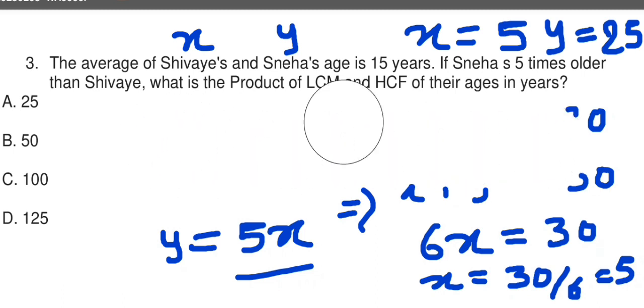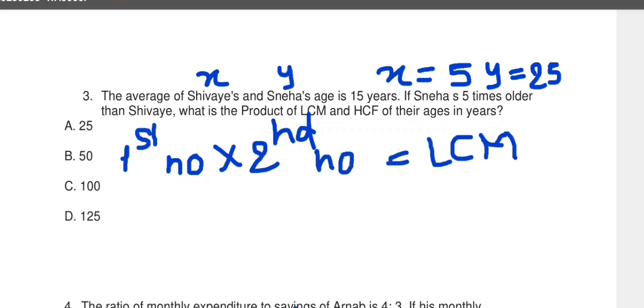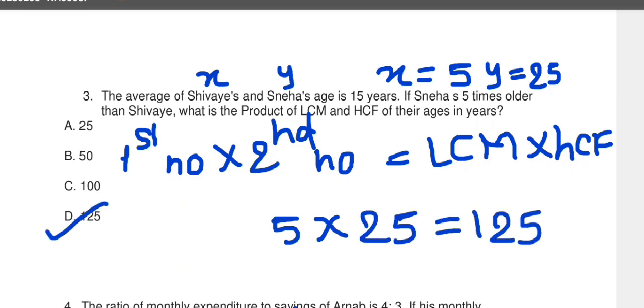Now the question asks what is the product of LCM and HCF of the ages in years. Most students will find LCM of 5 and 25, then find HCF, then multiply them. But there's no need to do that. When we did LCM and HCF questions, we learned that first number product with second number is equal to LCM into HCF. The product of two numbers equals the product of their LCM and HCF. So simply, LCM into HCF value is 5 into 25 equals 125. Option D is correct for this.